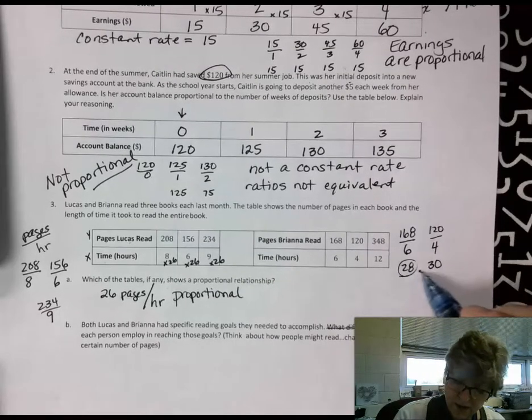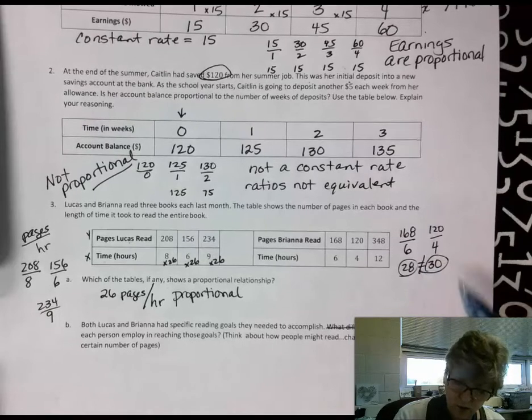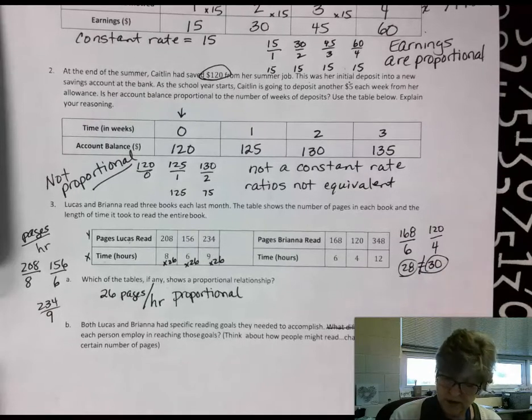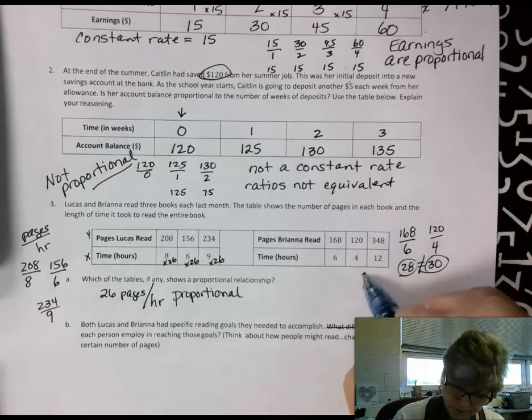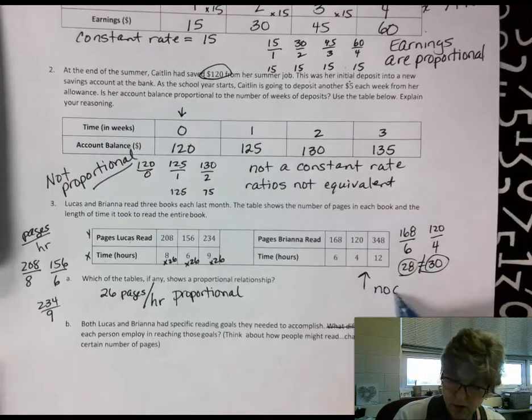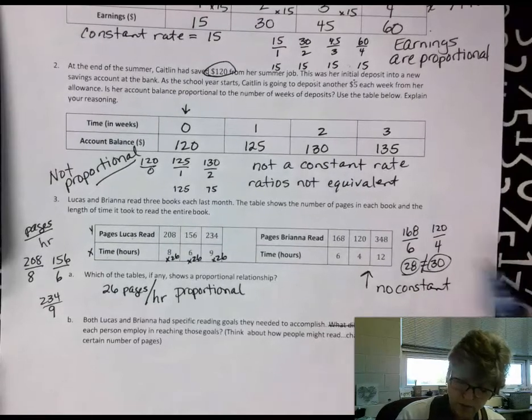So right there, those are not equal. So it cannot have a constant rate. No constant rate, so it is not proportional.